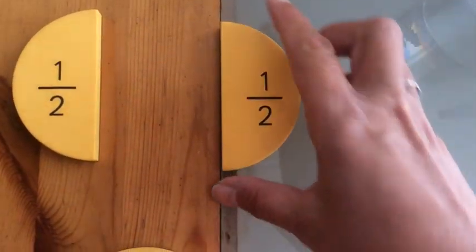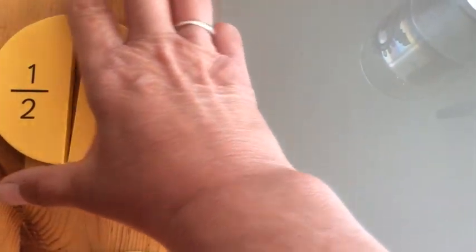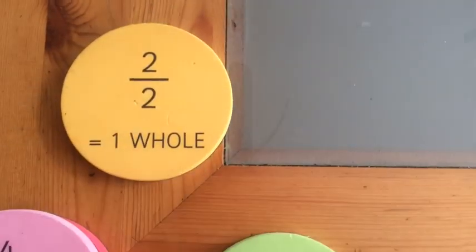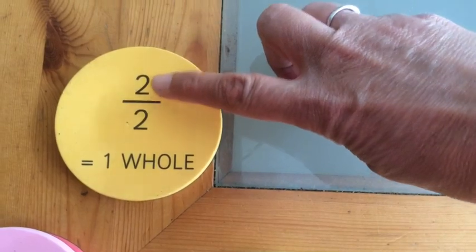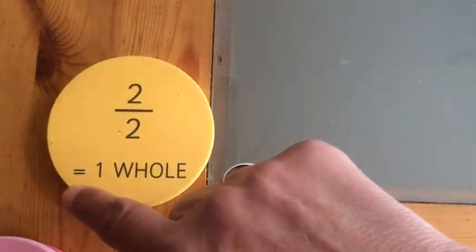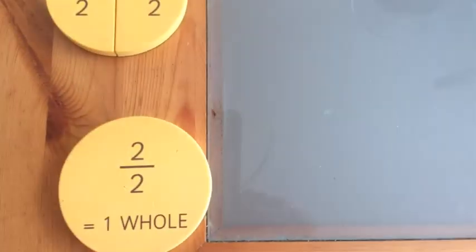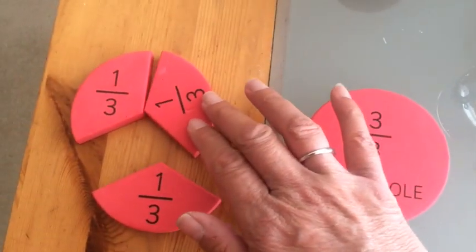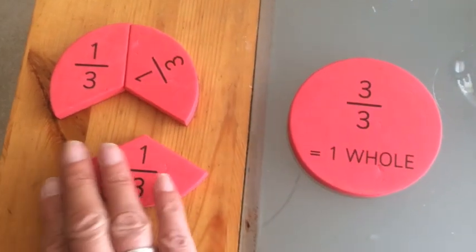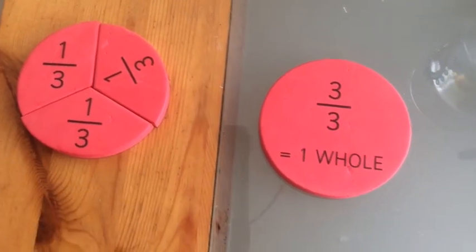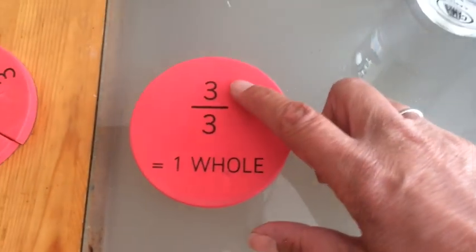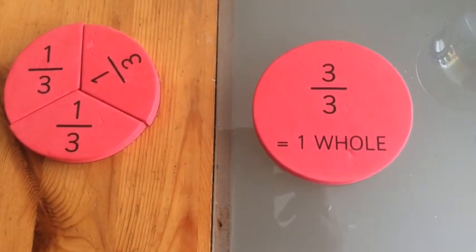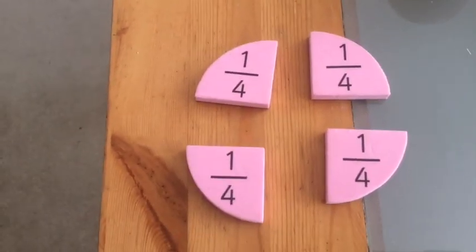So if you've got a half and a half, you've got two halves like this. And wherever you've got the top number, the same as the bottom number, it makes your whole shape. Same for thirds. If you've got one third, add one third, that's two thirds, three thirds. Remember when the numerator is the same as the denominator, you make a whole shape. It's exactly the same for any fraction.